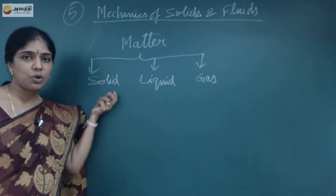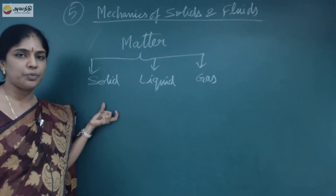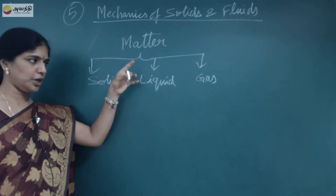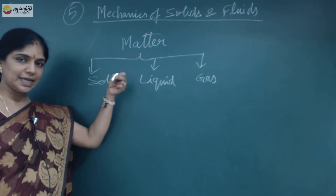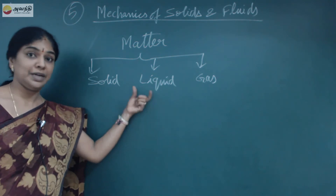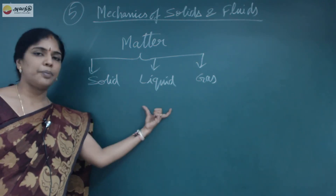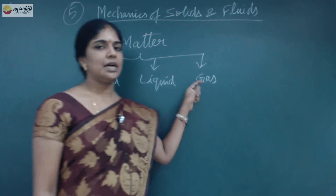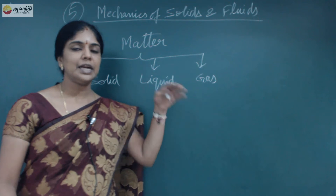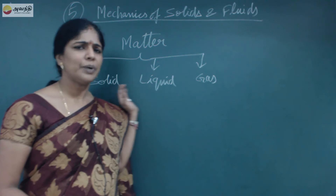What is a solid? A solid has a specific, definite shape and volume — that is why we call it a solid. Solids have three distinct properties.